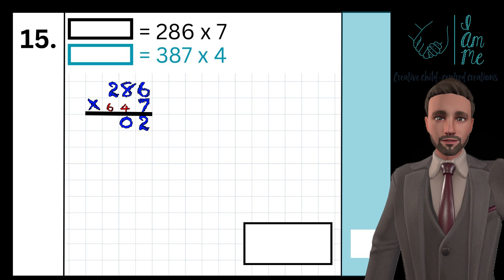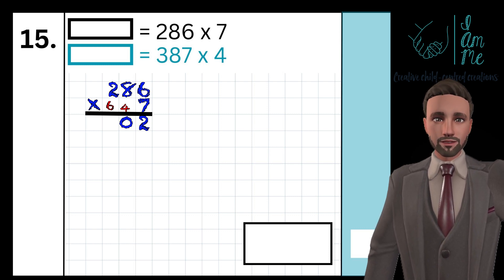2 times 7 is 14. Again, adding what I carried: 14 add 6 is 20.